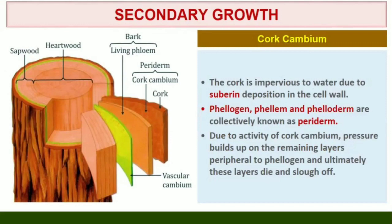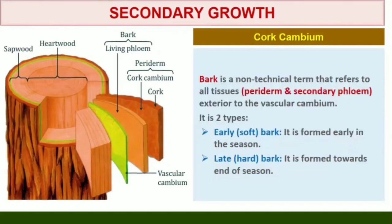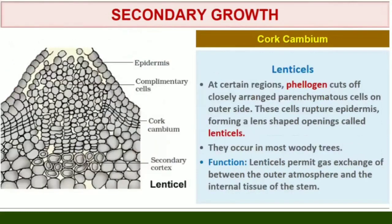Due to the activity of cork cambium, pressure builds up on the remaining layers peripheral to phellogen and ultimately these layers die and slough off. Bark is a non-technical term that refers to all tissues exterior to the vascular cambium, therefore including secondary phloem. Bark refers to a number of tissue types: periderm and secondary phloem. Bark that is formed early in the season is called early or soft bark; towards the end of the season, late or hard bark is formed. At certain regions, the phellogen cuts off closely arranged parenchymatous cells on the outer side instead of cork cells. These parenchymatous cells soon rupture the epidermis, forming lens-shaped openings called lenticels. Lenticels permit the exchange of gases between the outer atmosphere and the internal tissue of the stem.